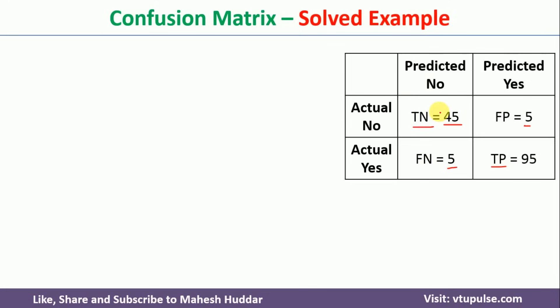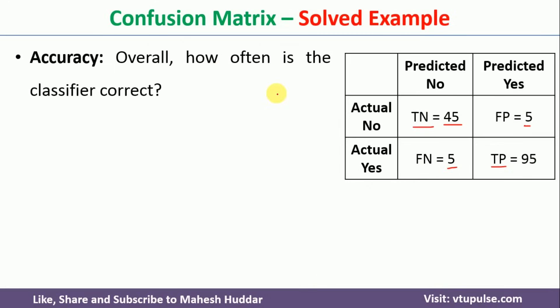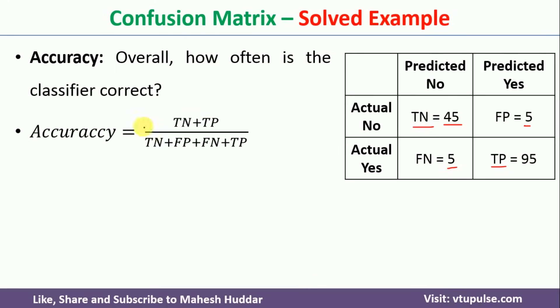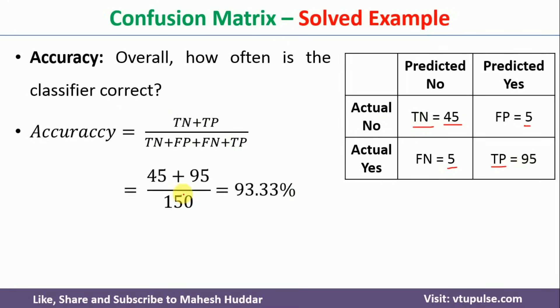Given this data, we will find the first performance metric: accuracy. Accuracy is the overall correctness of this model, which is equivalent to total correct predictions — that is true negative plus true positive — divided by total number of predictions. So that is 45 plus 95, divided by 150, which gives 93.33%. That is the accuracy of this particular model.